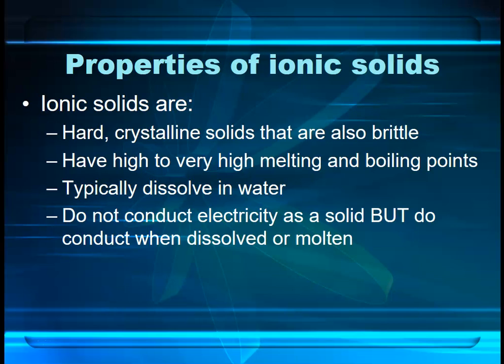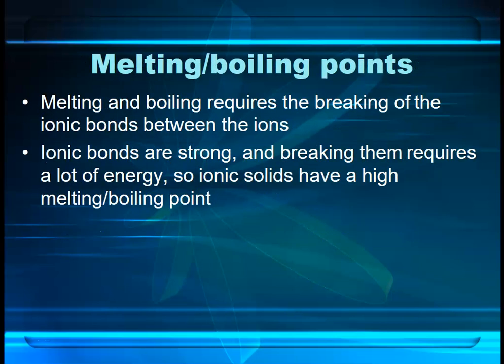Let's think about how and why this happens. First, looking at the melting and boiling points: the ionic bonds — the electrostatic attraction between the positively charged cations and the negatively charged anions — are quite strong. To melt or boil the substance, we need to break those bonds and separate the ions from each other. When something turns from a solid to a liquid or a liquid to a gas, we apply heat to break the forces holding the particles together. In this case those forces are ionic bonds, and they're quite strong, so they require quite a lot of heat to break. Therefore ionic compounds have high melting and boiling points.